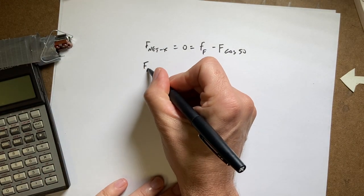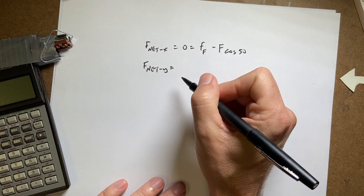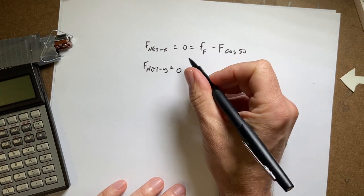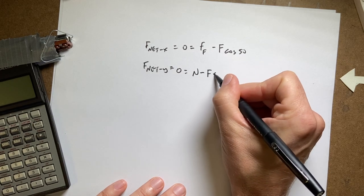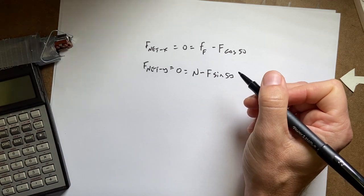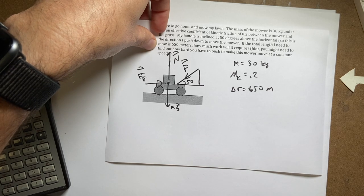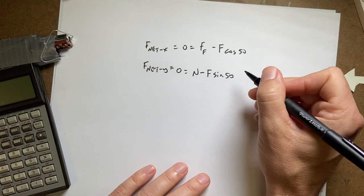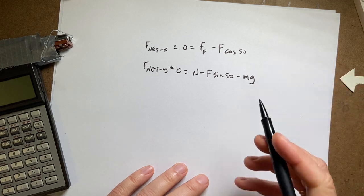So that's one equation. And now for the y direction, I get, again, it's not accelerating in the y direction. So I have zero. And then I have equals n minus f sine 50. Now I need the vertical component, I'm actually pushing down on the lawnmower. And then that's going to be minus mg.